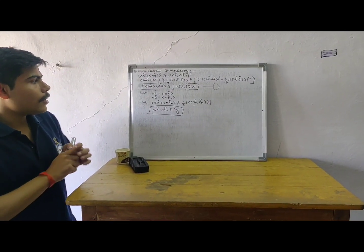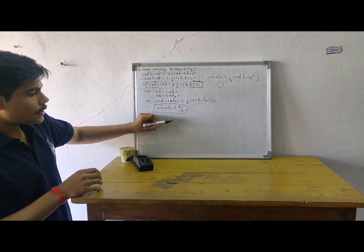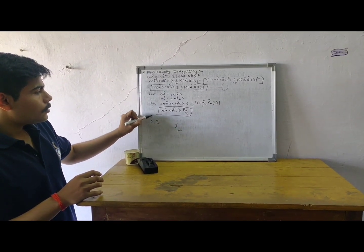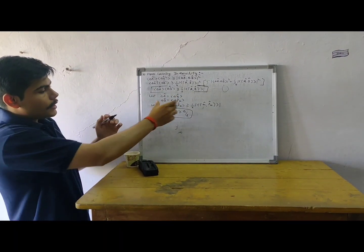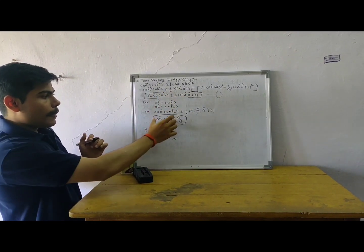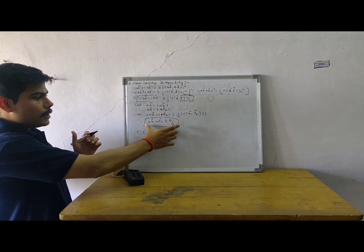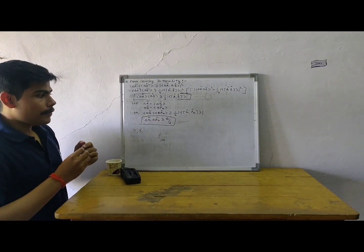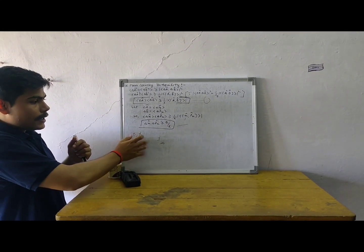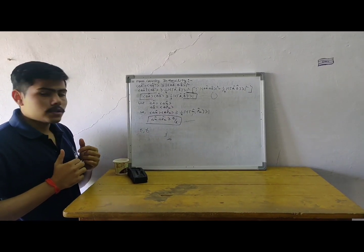This is called the generalized uncertainty principle because in place of del A and del B we can check the uncertainty of position and momentum, or we can check the uncertainty in energy and time. For example, if we substitute position and momentum in place of A and B and use the known commutation relation, removing the expectation value sign and taking the proper values, we recover the Heisenberg uncertainty principle. Likewise, we can derive the same form of uncertainty relation for energy and time. That is why this is called the generalized uncertainty principle. Hope you have understood. Thanks a lot, thank you very much.